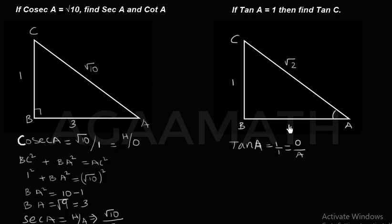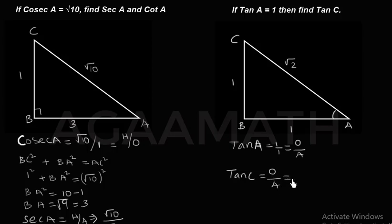Now we find tan C. The ratio of tan is opposite over adjacent. Opposite to angle C is 1 and adjacent is also 1, so tan C equals 1 over 1, which is 1. Therefore tan C equals 1. Thank you for watching.